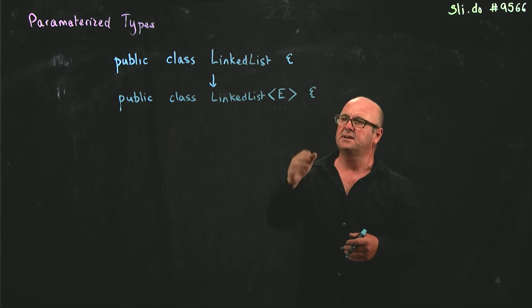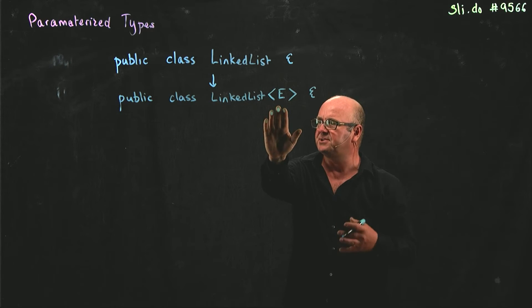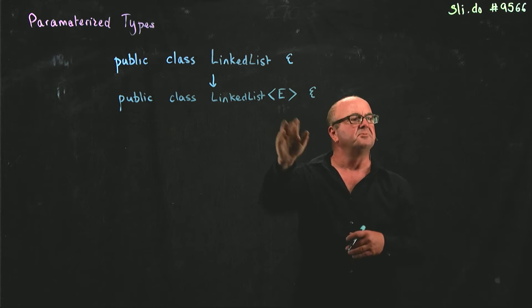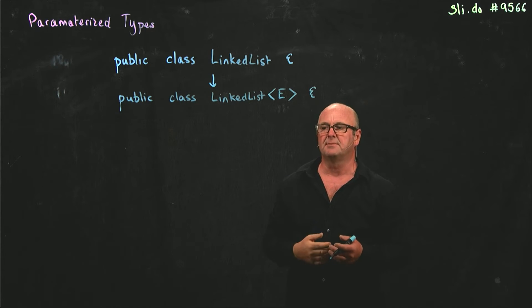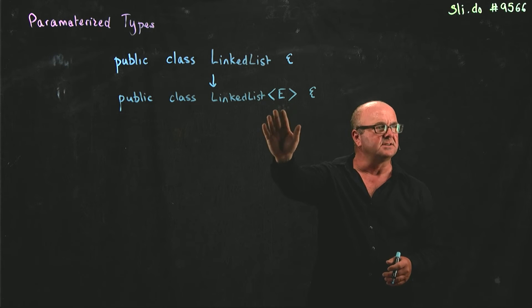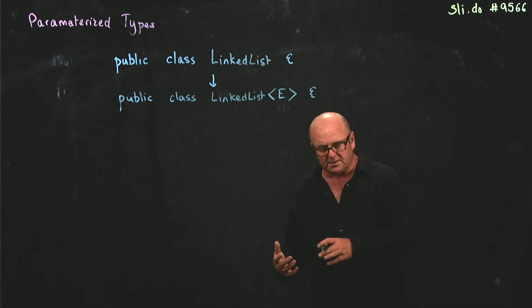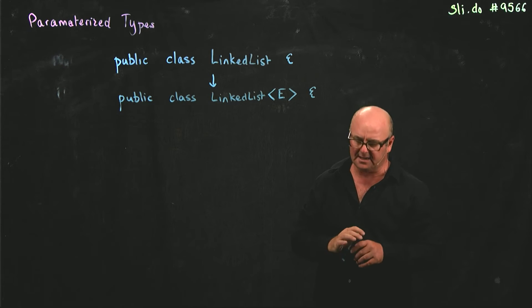So if we're accepting whatever the generic element is - monkeys, undergraduate, strings - we use E. If we're returning whatever the generic element is - monkeys, undergraduate, strings - we use E to denote we're returning it. So throughout the rest of the code, we use that E.